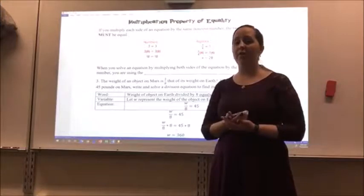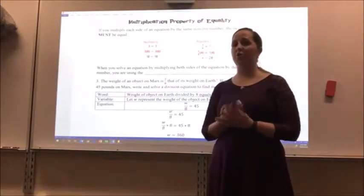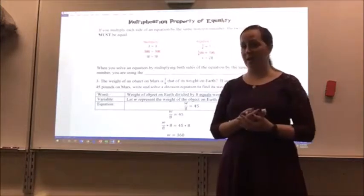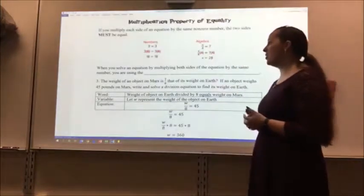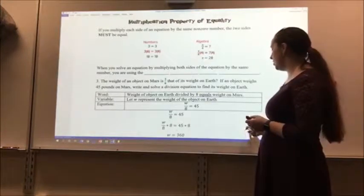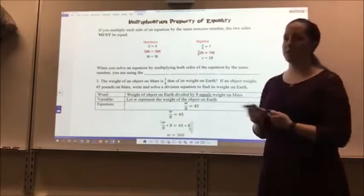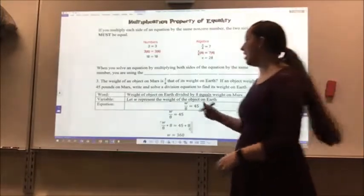I'm doing this to both sides of my equation, so I'm maintaining the balance in my equation. Remember, solving equations is all about balancing. Whatever you do to one side of the equation, you must do to the other side. When you solve an equation by multiplying both sides by the same number, you are using the multiplication property of equality.